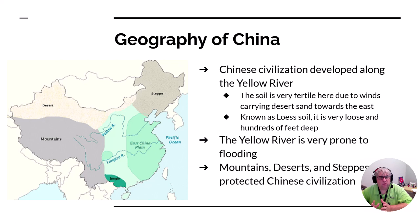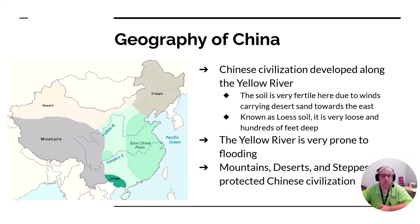You also have grasslands known as steppes, desert, mountains, the ocean, plains, and jungle. Really, the geography of China has just about every formation you can think of.